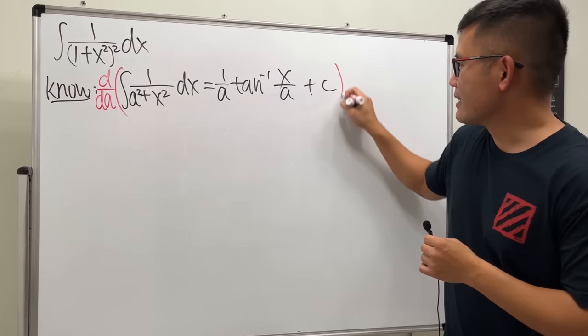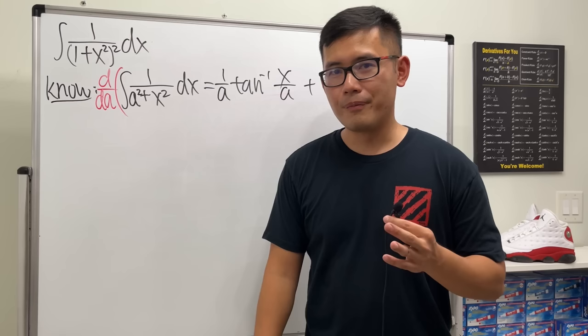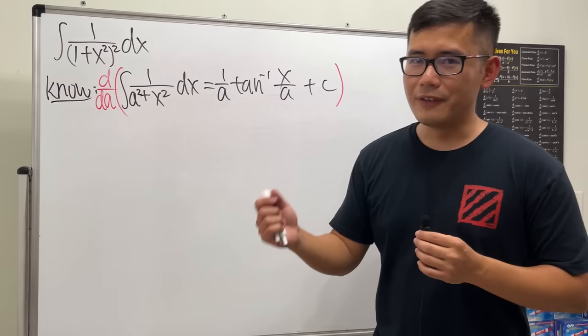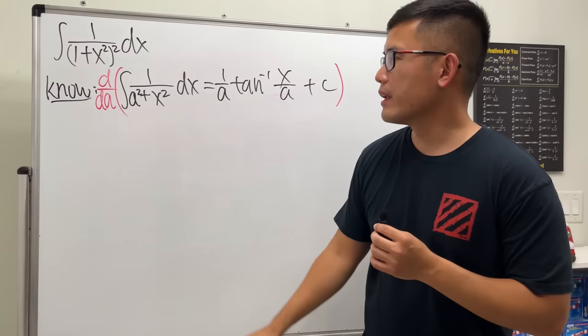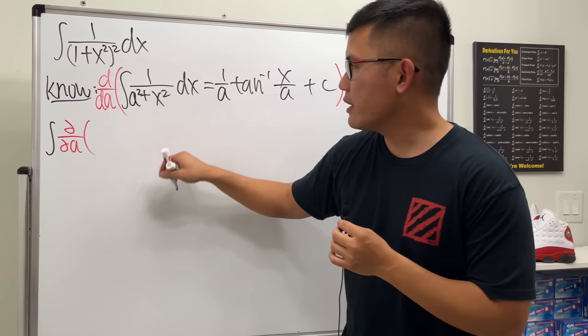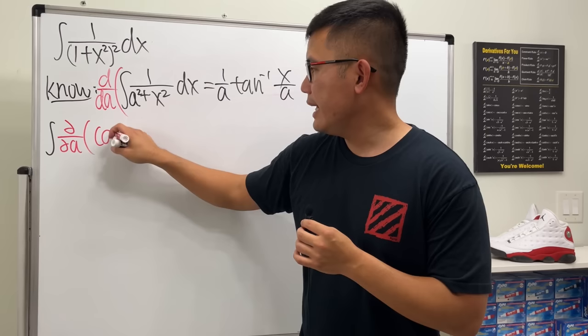On the left-hand side, we are differentiating an integral. So what do we do? This is the time we use differentiation under the integral sign. That tells us we can bring this inside but change the d to the partial derivative symbol because we have A and also x inside here. So this left-hand side becomes the integral of the partial derivative. To differentiate that, let's write this as (A² + x²) raised to the negative 1, and we still have dx.